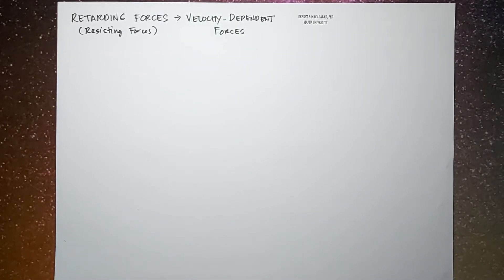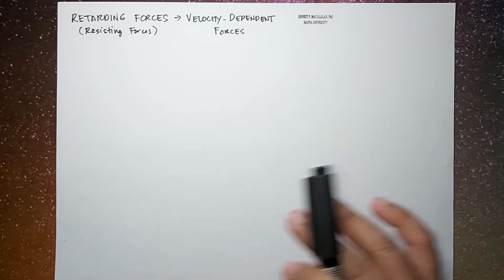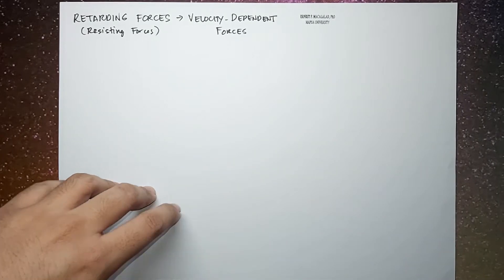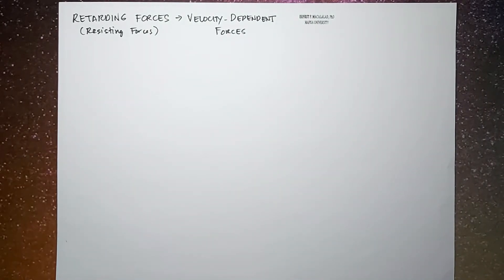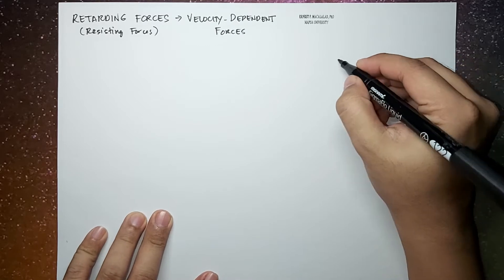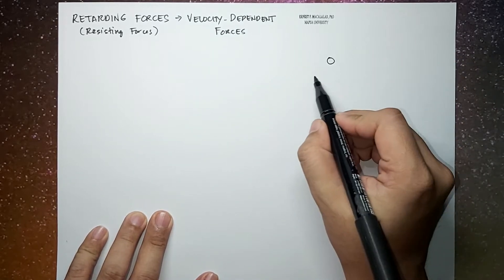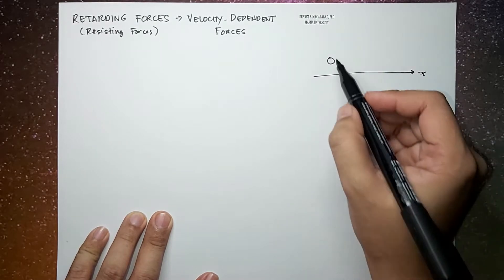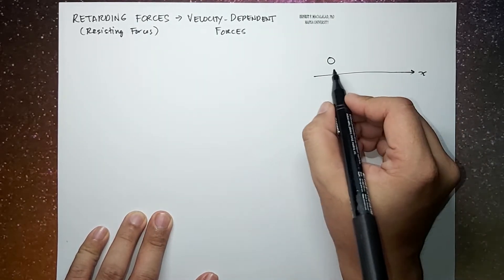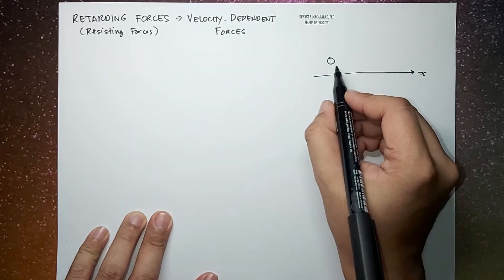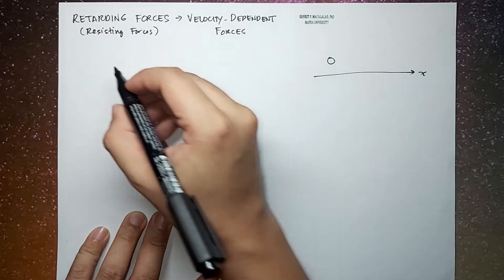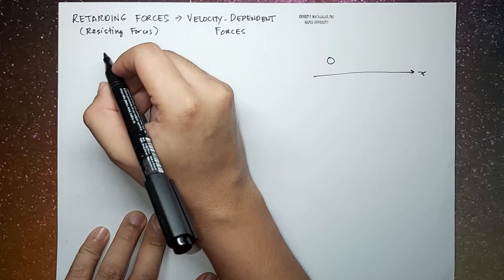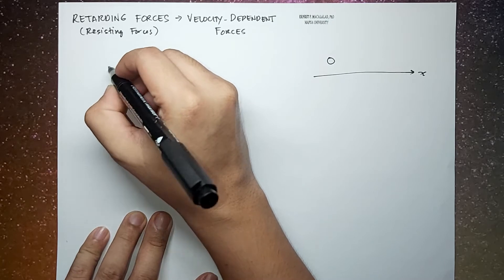What's up guys, it's me Sir Earnest, and today we're going to talk about retarding forces. Recall that for one-dimensional motion, if we have a particle moving in the x direction, the force that can be applied on this object would relate to its acceleration by this general equation of motion.